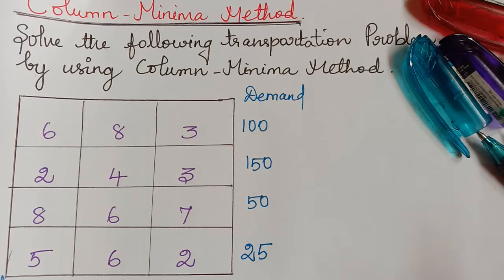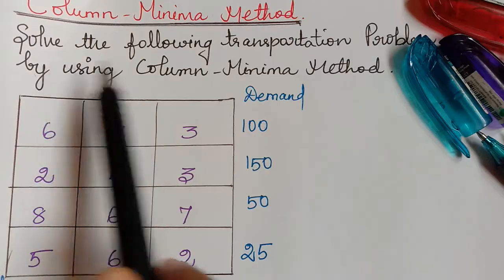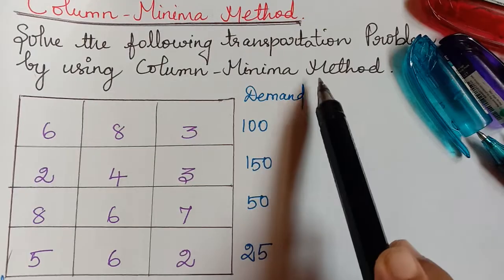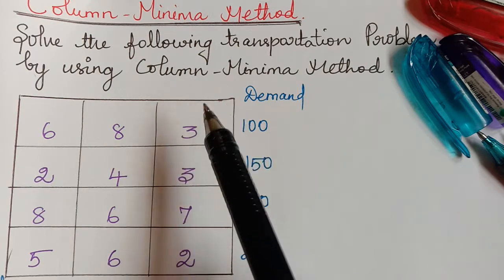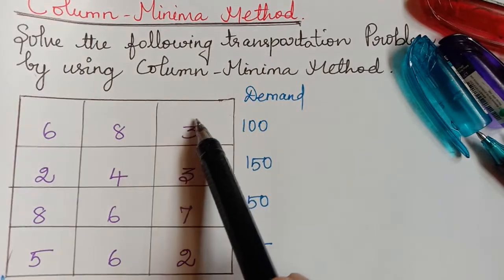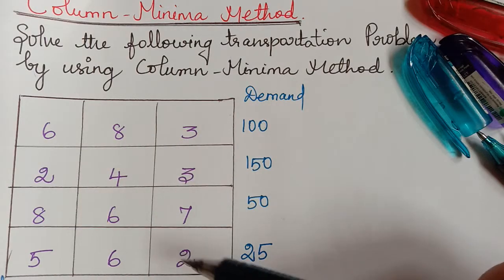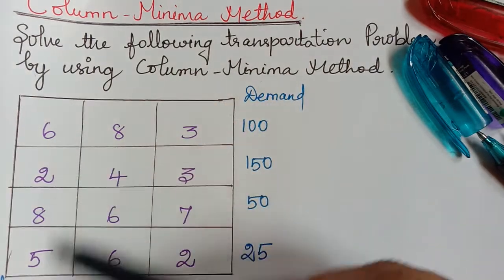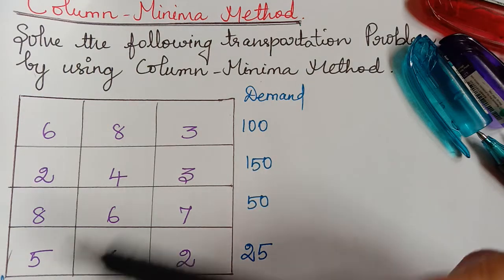The next problem is on column minima method. We have a transportation problem which we are asked to solve using the column minima method. In our previous video we learnt about northwest corner rule, least cost entry method, and row minima method, where in row minima we chose the minimum element from each row and gave the allocation. Similarly, in column minima method we choose the column-wise minimum element and give the allocation.